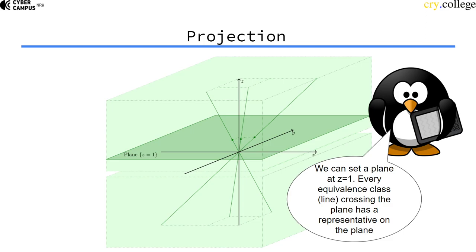So now we can just put the plane at z equals 1, for example. There's a plane at z=1. Since we have this equivalence relation, we can say that every line that crosses the plane has a representative on this plane.